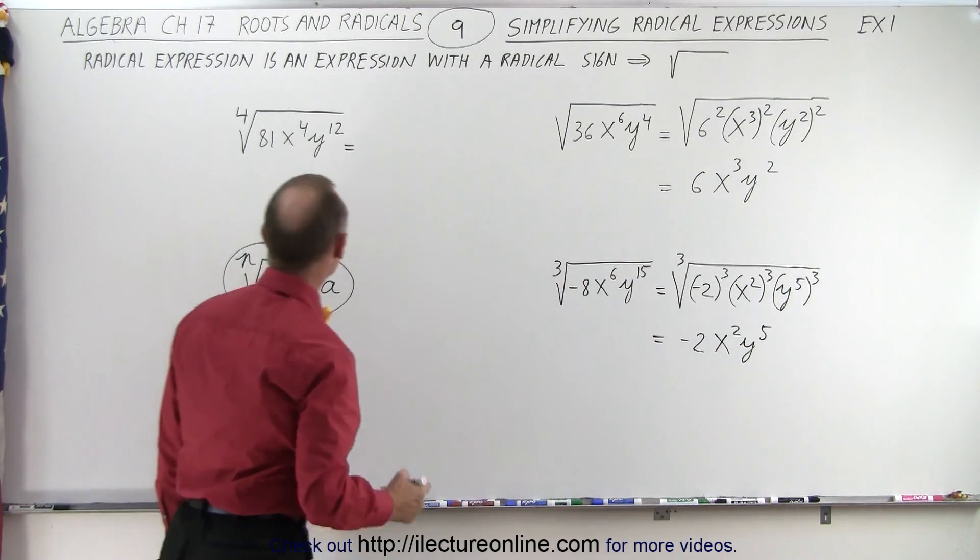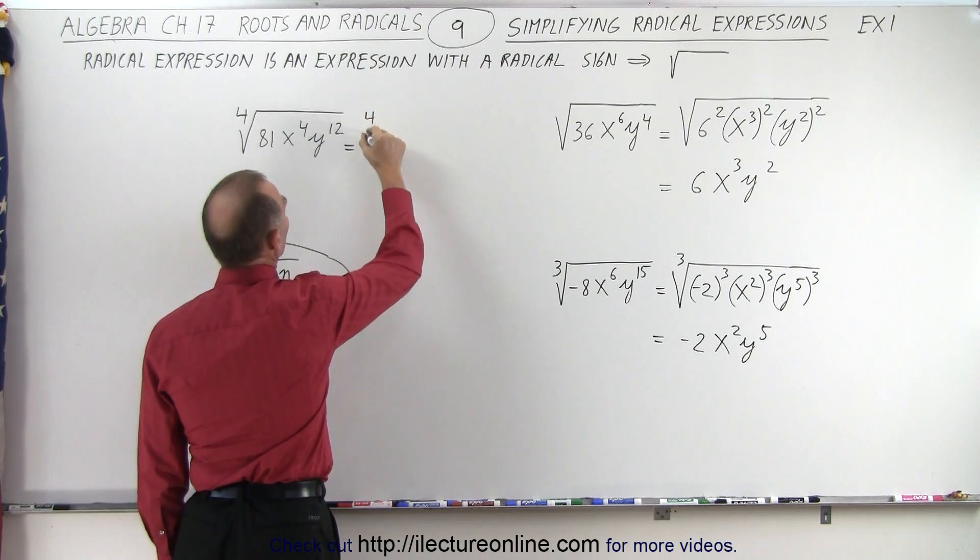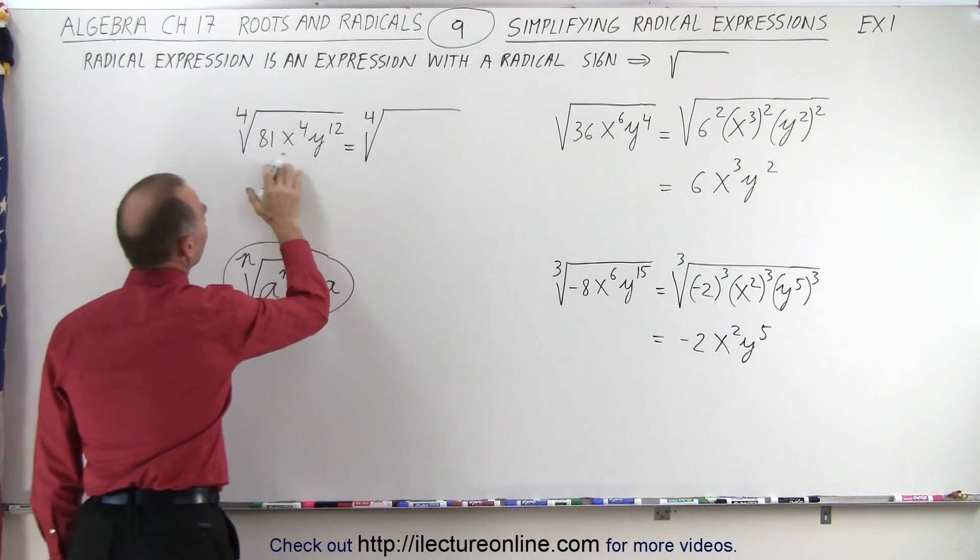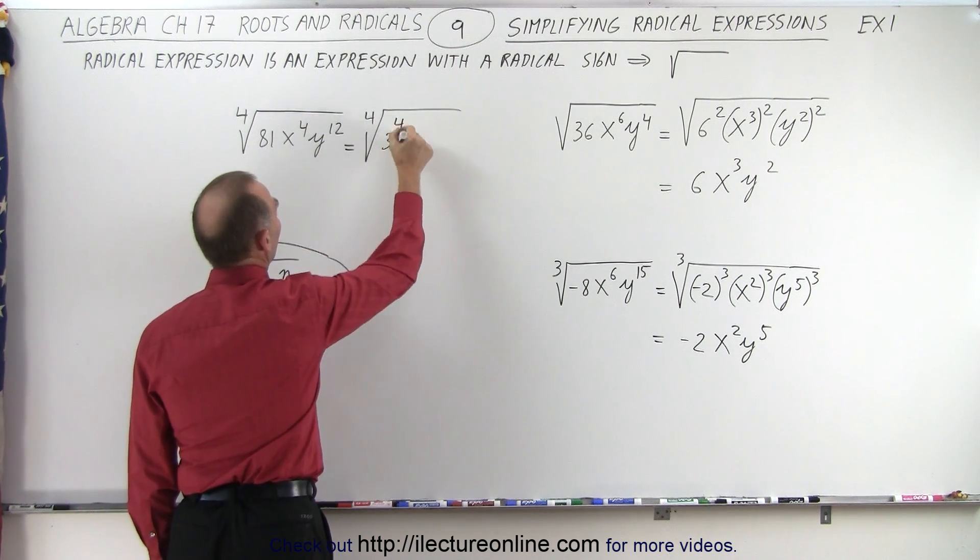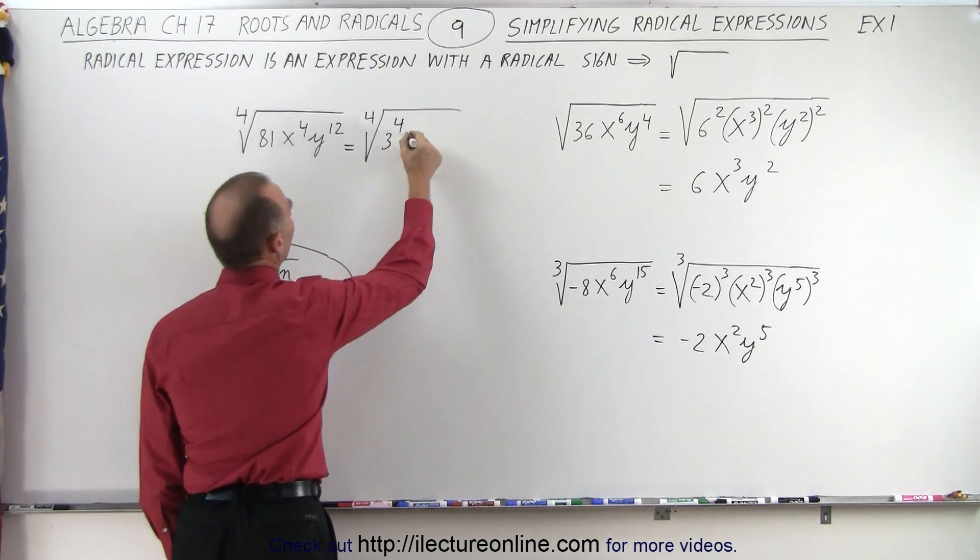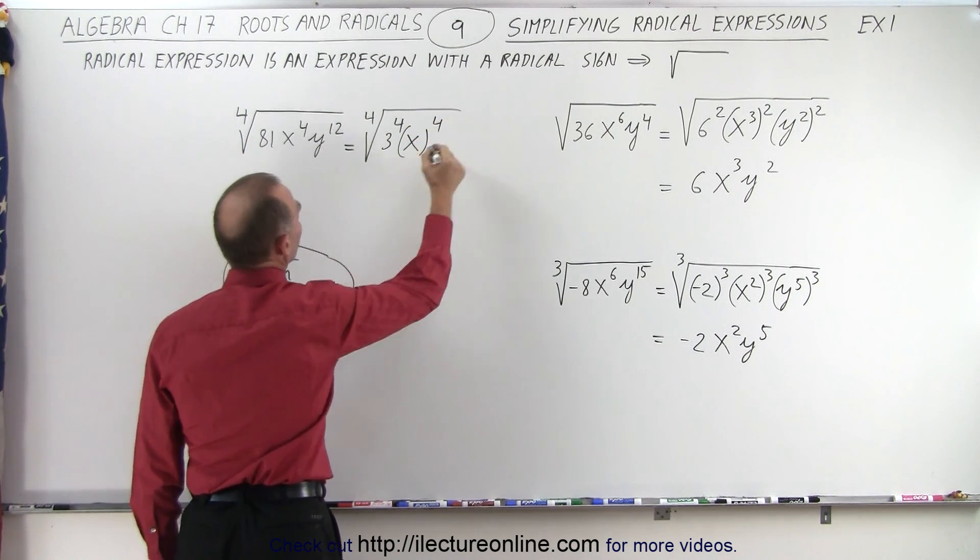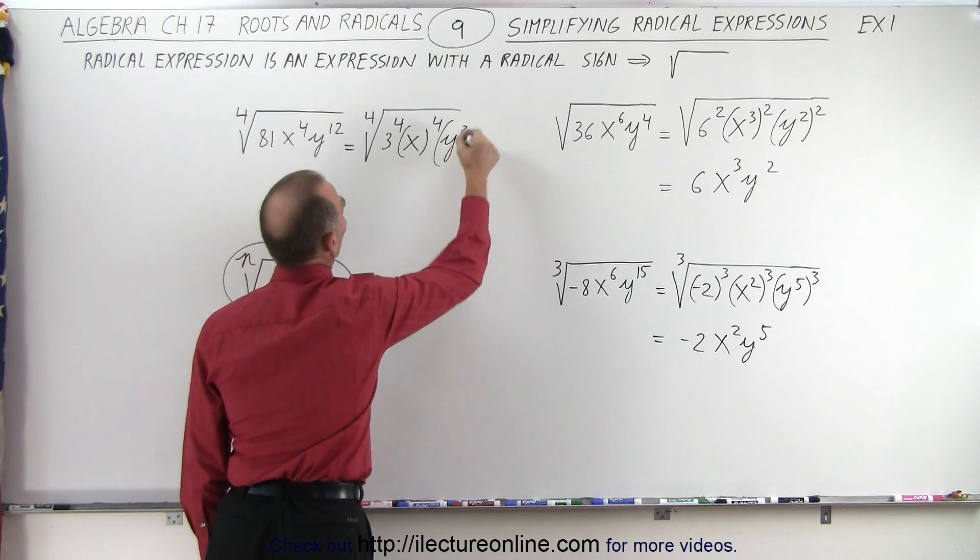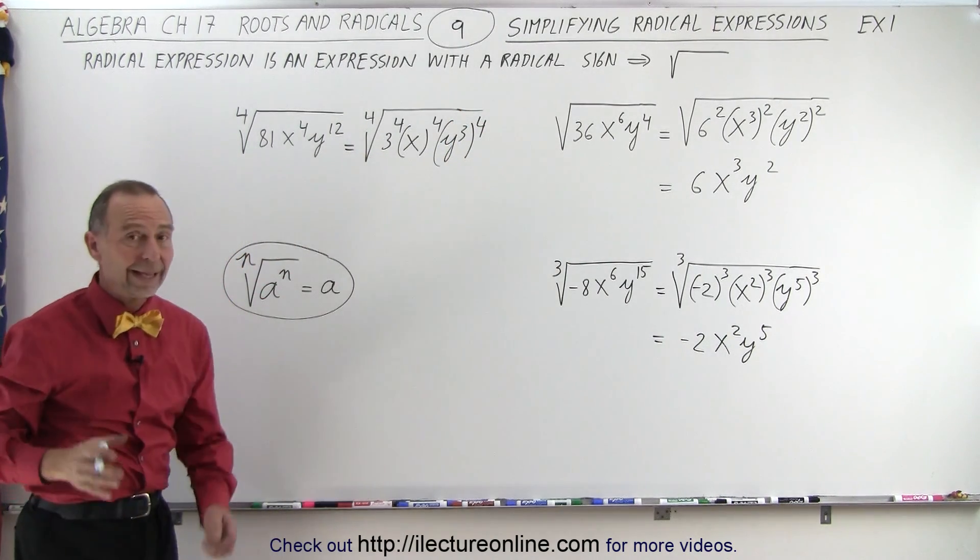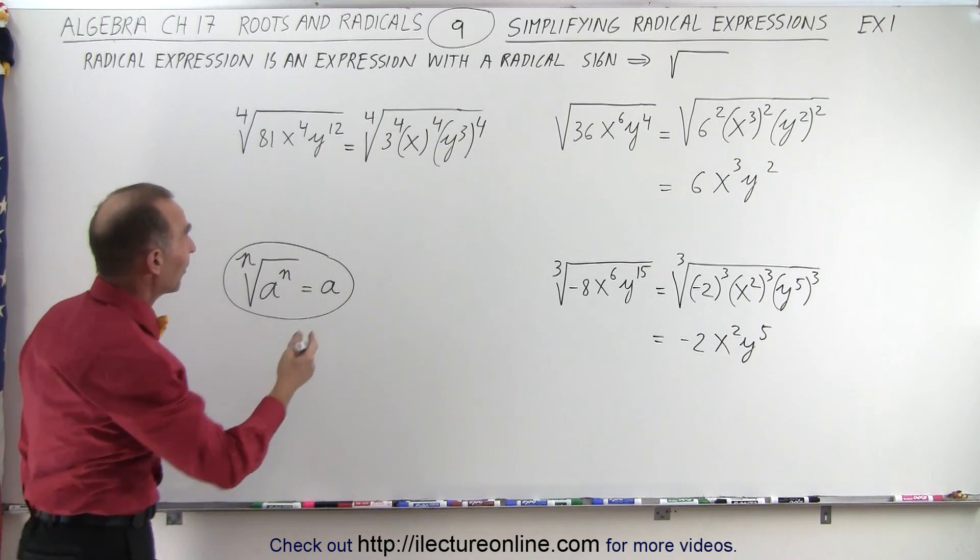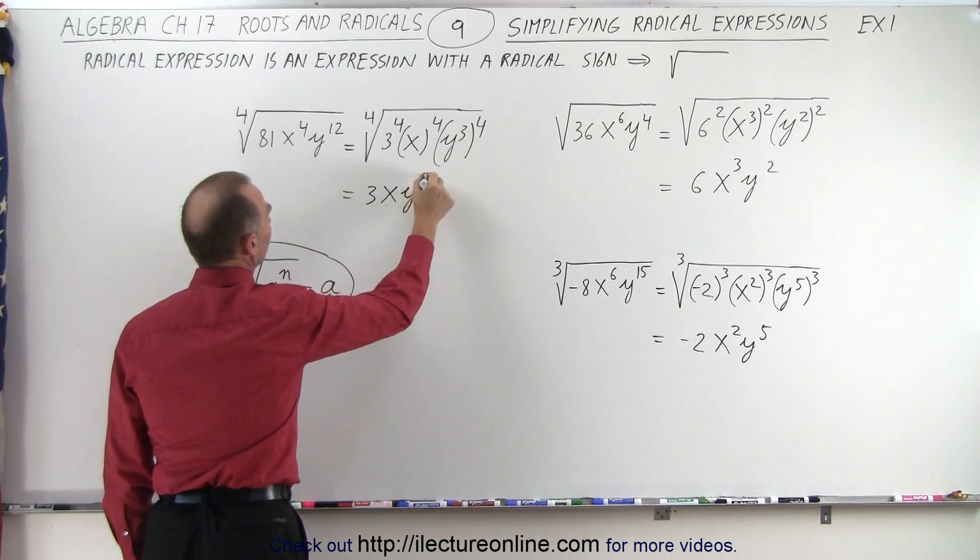And then, here we have an example where I have the fourth root of this. So, again, we're going to write this as the fourth root of something, everything inside, written to the fourth power if we can. So, 3 to the fourth power is indeed 81. x to the first power quantity to the fourth is indeed x to the fourth. And y cubed raised to the fourth power would, of course, equal y to the twelfth. And then, we can see how we can simplify that. This then becomes equal to 3 x y cubed.